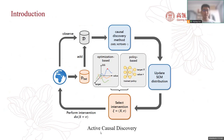Active causal discovery is a framework where we design interventional experiments to reduce our uncertainty about the structural causal model. The existing optimization-based methods myopically select interventions that maximize the expected information gain about the underlying causal relationship at each step.